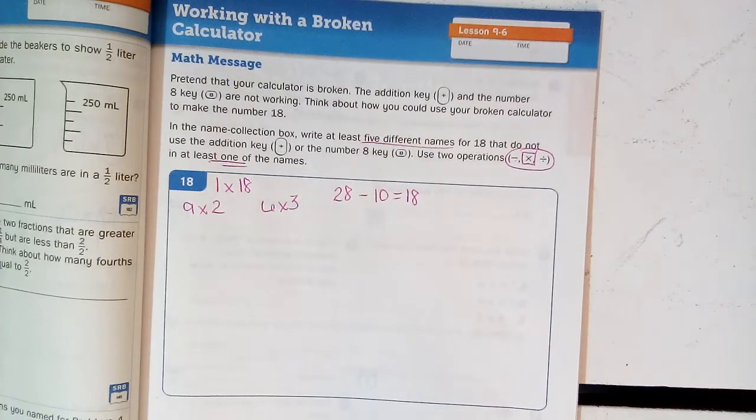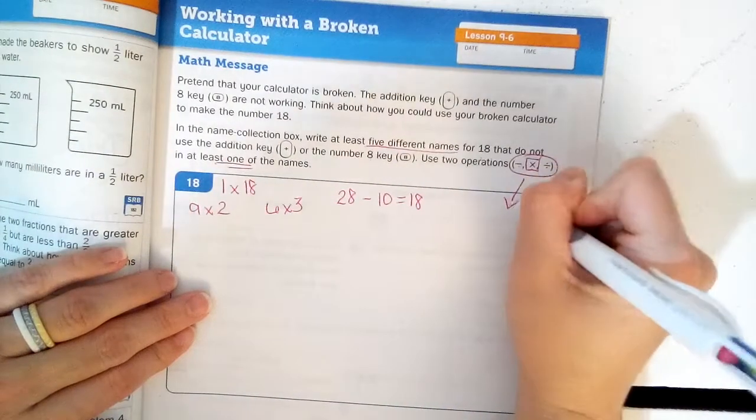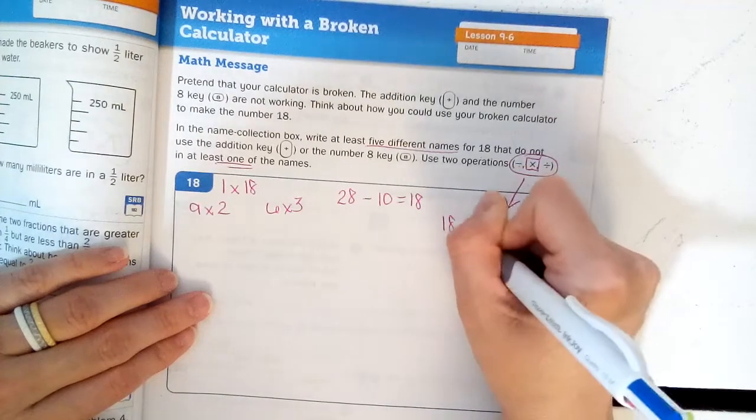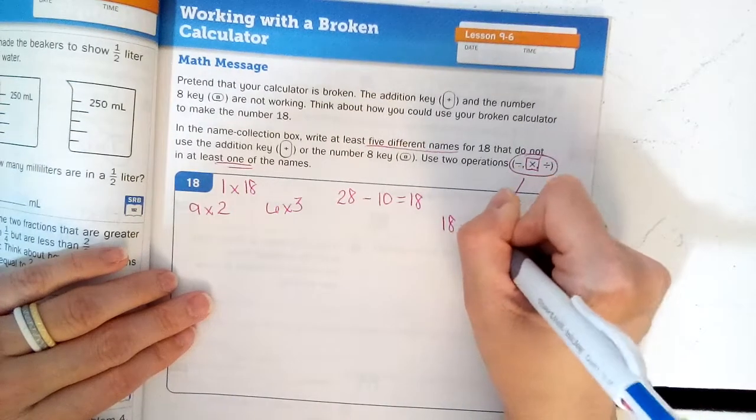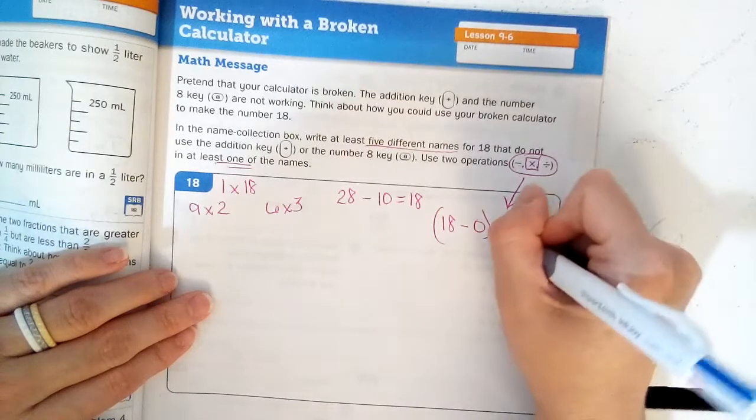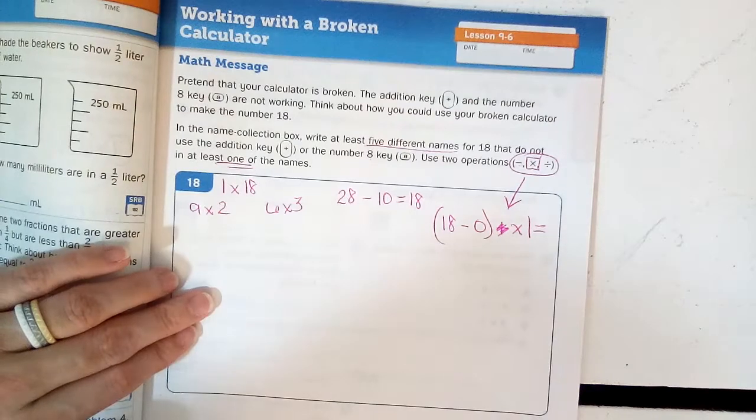Like, oh, here's one. I'm going to do just one of this tricky one. Let's pretend I'm going to do 18 take away 0, wait, times 1.